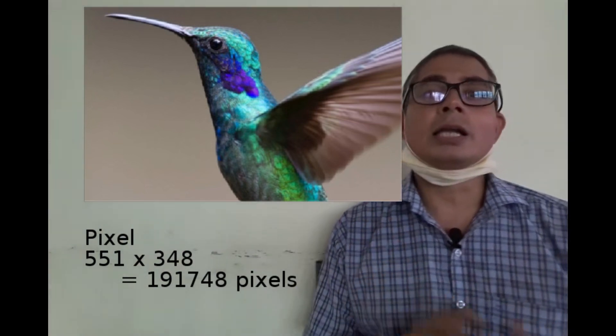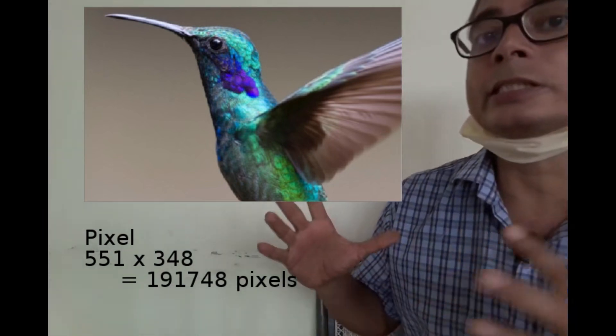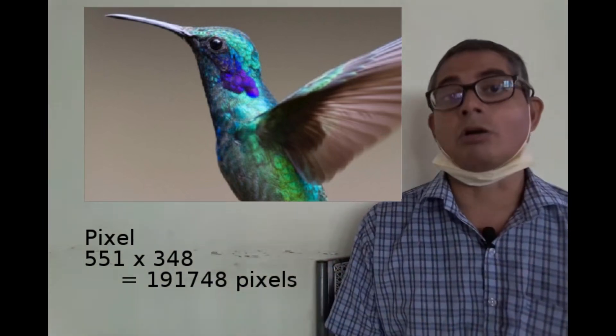When you hear about a 13 megapixel camera, the matrix is so very large that there are about 13 million pixels in all.